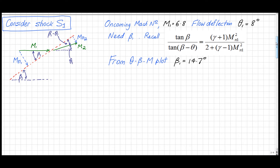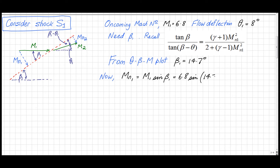We now have enough information to start calculating how things change across the shockwave. The first thing we calculate is the Mach number component normal to the shockwave upstream of the shock, Mn1. That's M1 times sin(β1): 6.8 times sin(14.7°), which gives a normal Mach component of 1.73.